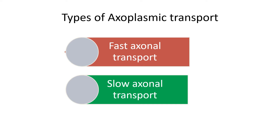Axoplasmic transport can be categorized into two forms: fast axonal transport and slow axonal transport. Fast axonal transport has a velocity of approximately 200 to 400 millimeters per day, while the slow one moves at 0.2 to 0.4 millimeters per day. For example, when a neurotransmitter is transported from the spinal cord to the neuromuscular junction in a person's foot, it takes approximately 2.5 days, while the same distance for a soluble protein takes three years.